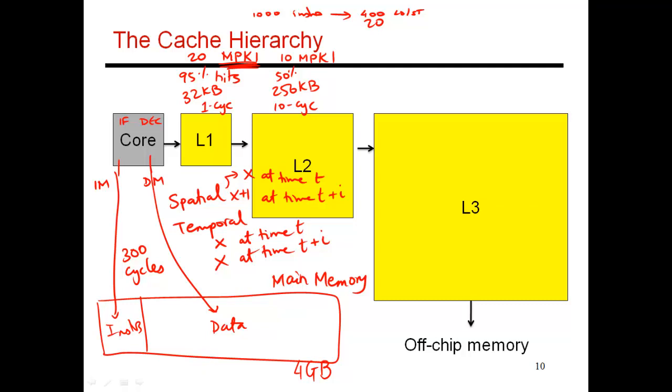But you'll see that the L2 is doing a better job of filtering requests. The L1 makes sure that out of 1,000 instructions executed on the processor, only 20 of them escape the L1. And now, again, out of those 1,000 instructions executed by the processor, only 10 of them are escaping your L2.